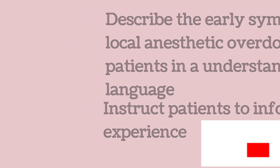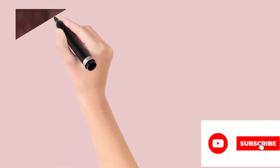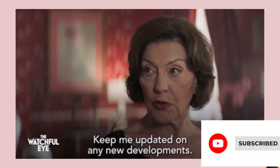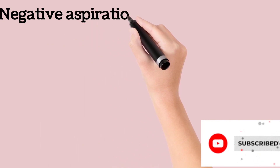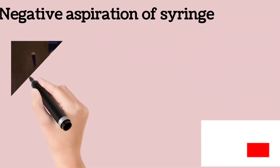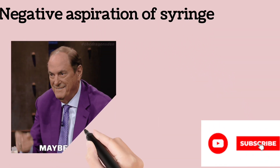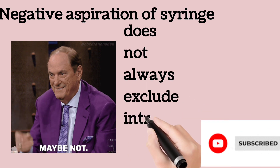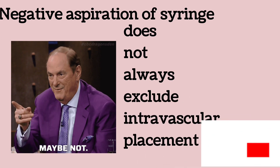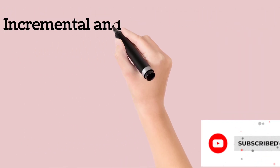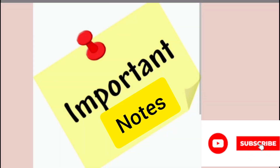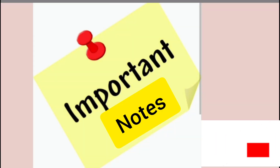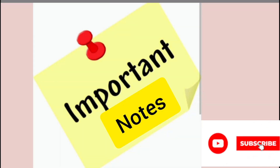Describe the early symptoms of local anesthetic overdose to the patient in easily understandable language, and instruct the patient to report any uneasiness. Negative aspiration of the syringe does not always exclude intravascular placement. Incremental fractional dosing should be the rule for all patients undergoing major conduction blockade, as prevention of massive intravascular injection or excessive dosing is crucial.